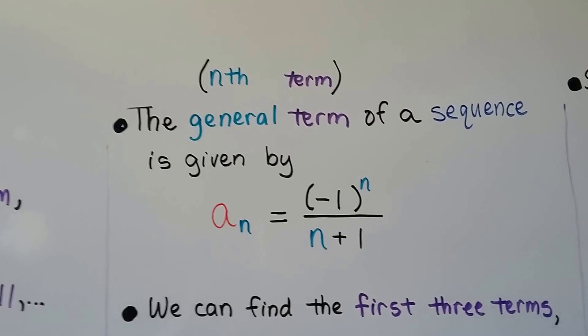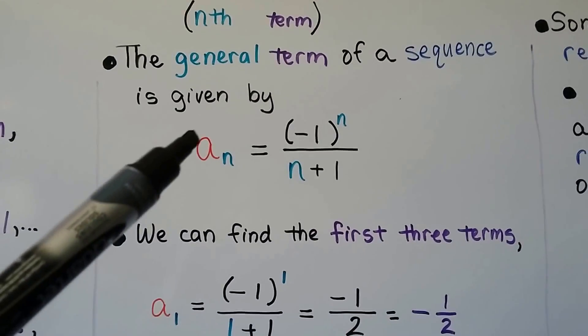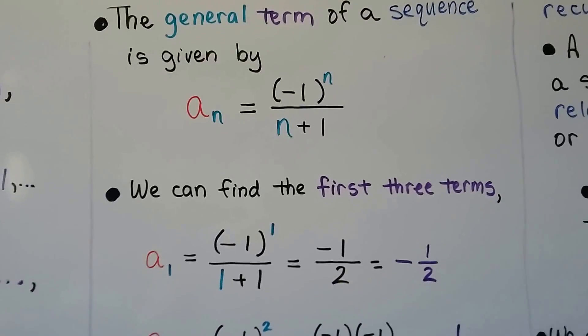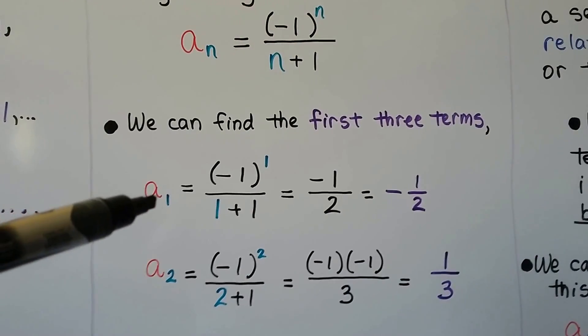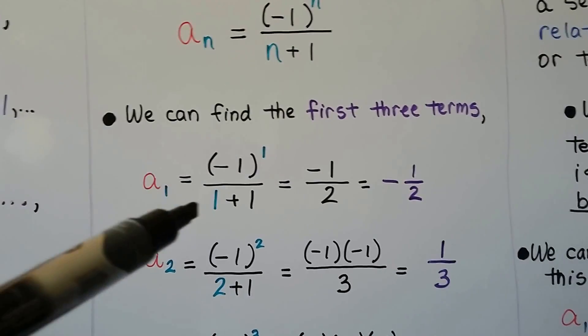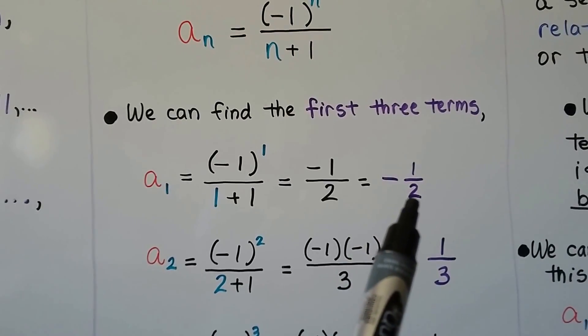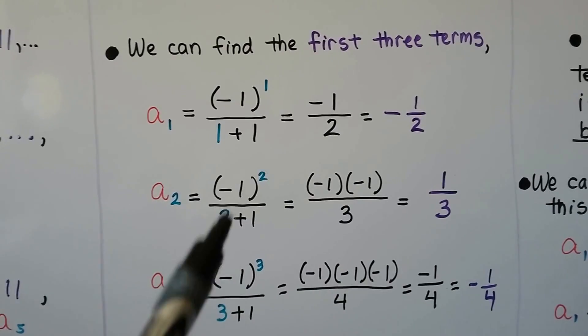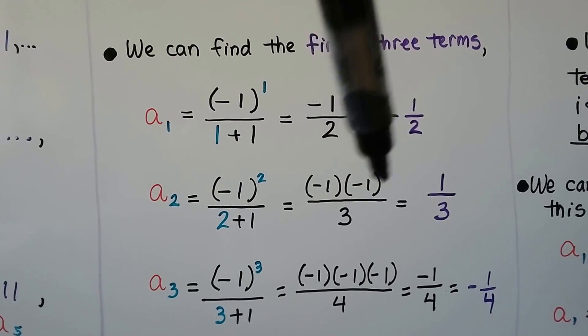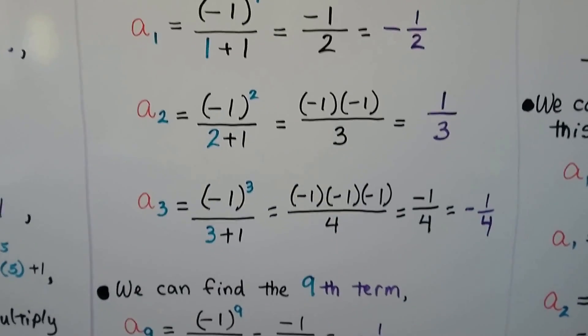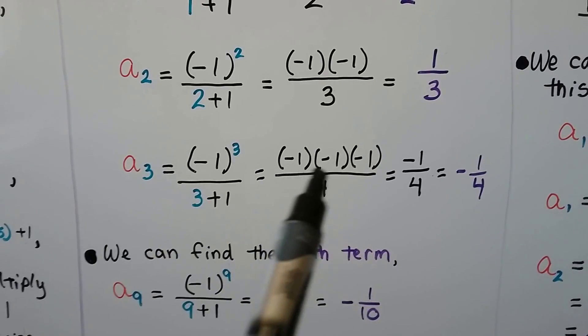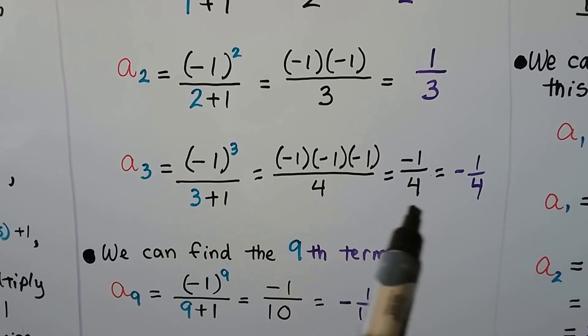The general term, that means the nth term of a sequence, is given by a sub n is equal to negative 1 to the nth divided by n plus 1. So, we can find the first three terms. We just plug in our subscript for the n. For a sub 1, we have negative 1 to the first power over 1 plus 1. It's going to give us a negative half. a sub 2, we put a 2 here. So, we have negative 1 to the second power over 2 plus 1. That means we have negative 1 times negative 1, which is a positive 1, over a 3. We have one-third. a sub 3, we're going to have a 3 as our exponent and a 3 in our denominator down here. Now we have a negative 1 over a 4. We have a negative 1 fourth.